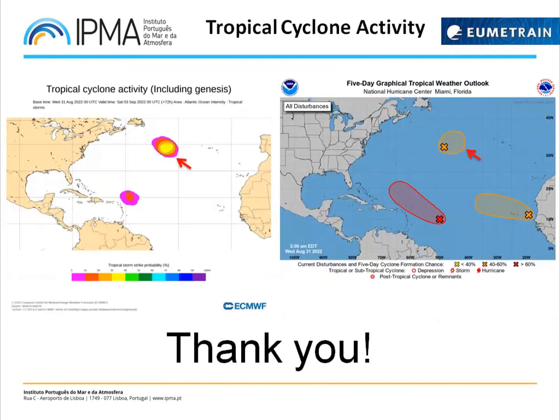Finally, there is some possible tropical activity in the Atlantic in the next days. On the right side you can see the tropical storm strike probability from ECMWF, and on the left the five-day tropical weather outlook from the National Hurricane Center — these are the most recent forecasts. Remember the area I mentioned earlier southwest of the Azores with deep convection — this is that area. Colleagues at the Azores will need to monitor it carefully in the next days. This concludes my part — thank you very much for listening. Nuno, you may continue.